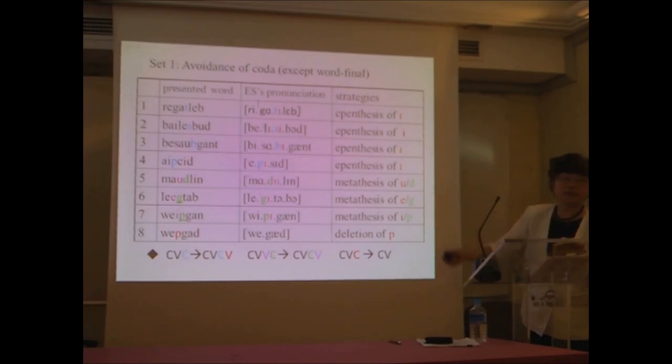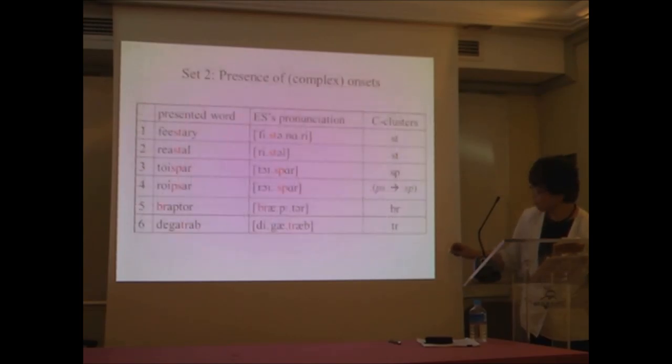Now the epenthesis is the strategy that she used most. So whenever she sees the coda consonant within a word, what she did is she inserts some kind of vowel. In this case schwa. Lax E. And this is schwa. Tense E. This is another schwa. To turn this coda consonant to onset consonant. So the epenthesis: insertion of some kind of vowel, she avoided the coda.